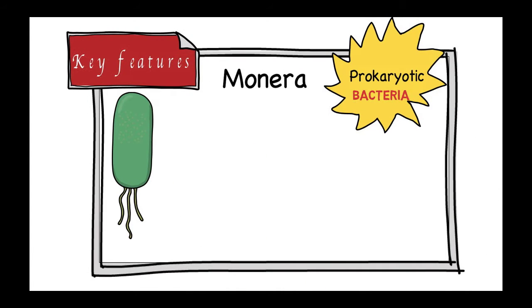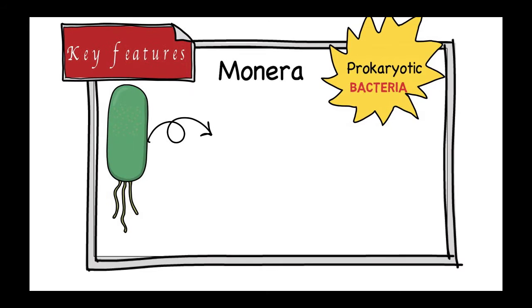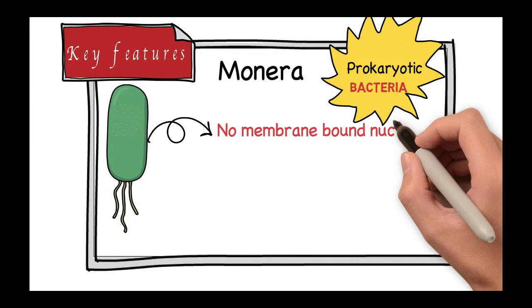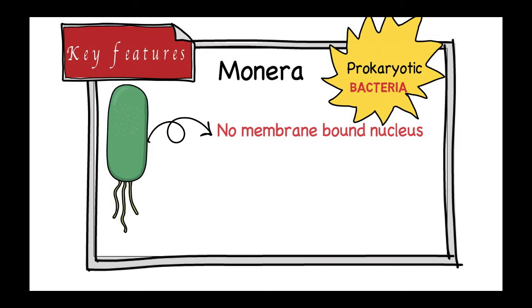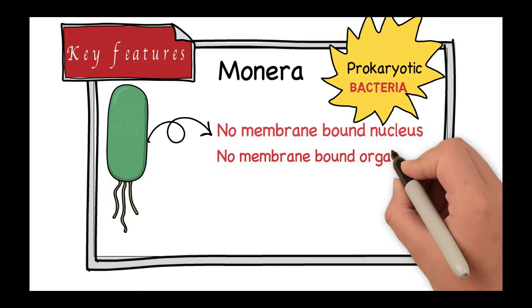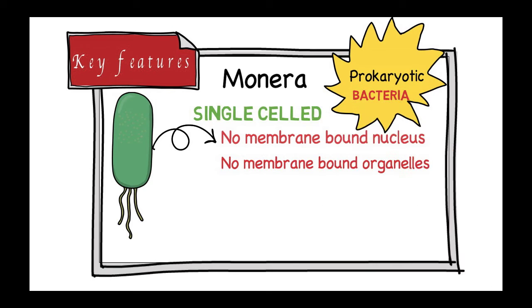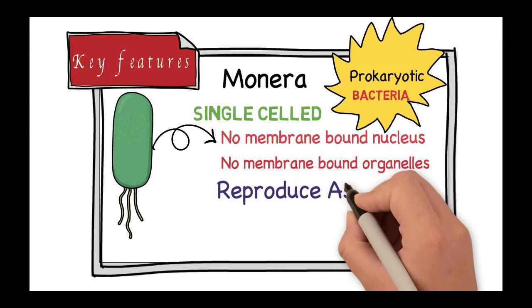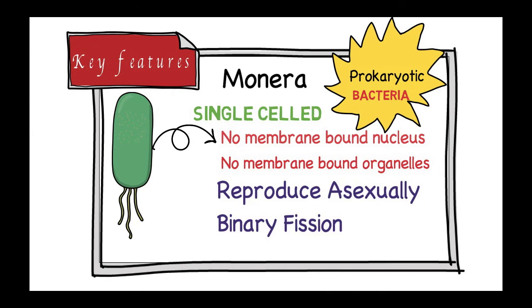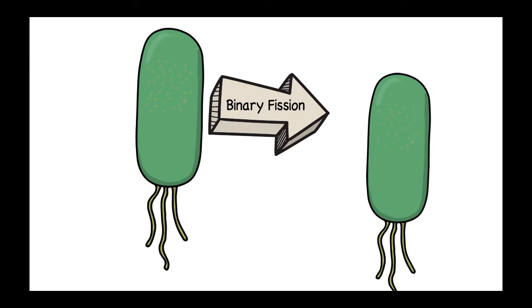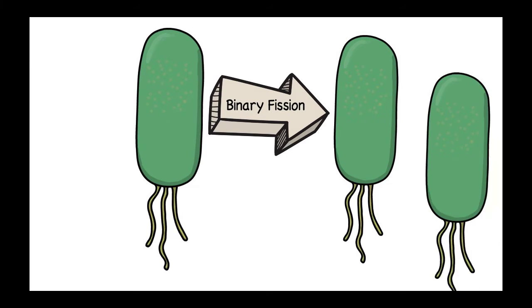When we say prokaryotic, we mean that these organisms do not have a true nucleus — they do not have a membrane-bound nucleus and they do not have membrane-bound organelles. They are single-celled organisms and they reproduce asexually by a method known as binary fission, whereby a single bacterium divides to give rise to two identical bacteria.